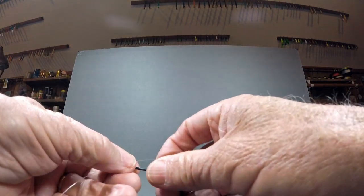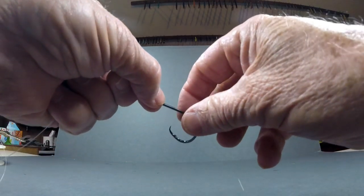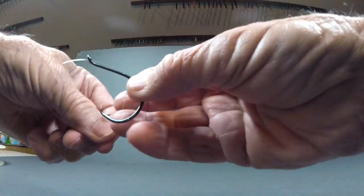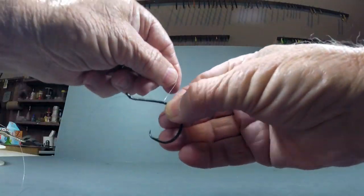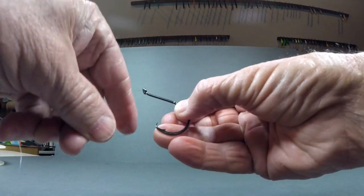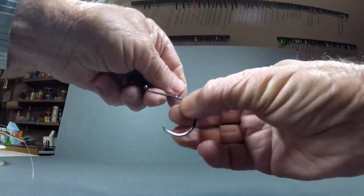Snell knots, of course, are used on hooks that have either turned down or turned up eyes most of the time. Once again, I ran the line through, ran the line up the shank of the hook, pinched a loop in it, and I'm tying the tag line around the main line, but I'm also tying it around the hook. For a Snell knot, I usually do about seven turns. You can do however many you want.